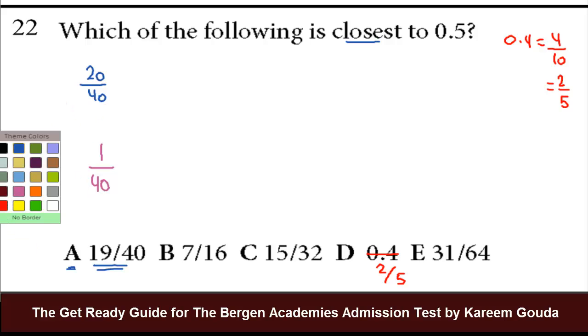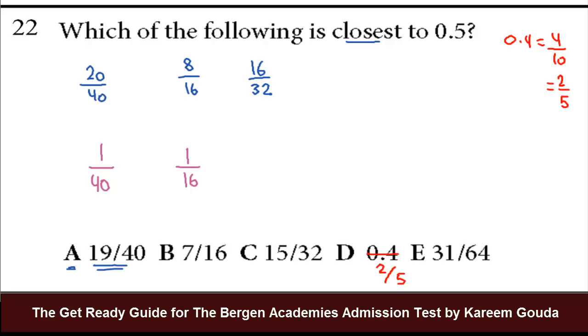Now similarly, B, we can write half as 8 over 16. What's the difference between 7 over 16 and 8 over 16, which is half? It's again 1 over 16. So now I found the trick. Let's do this to C as well. Half here would be 16 over 32, and the difference would be 1 over 32.